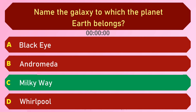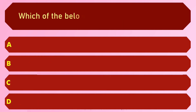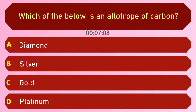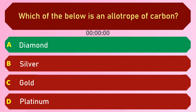Which of the below is an allotrope of carbon? Options are: A) Diamond, B) Silver, C) Gold, and D) Platinum. The answer is option A, Diamond.